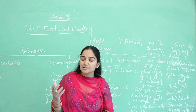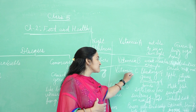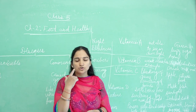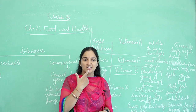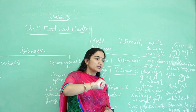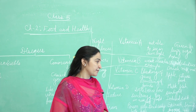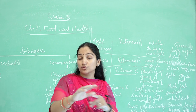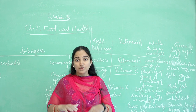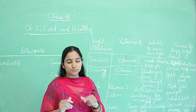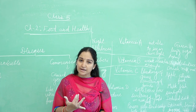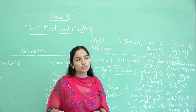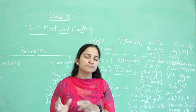The third disease is scurvy, which occurs due to a lack of Vitamin C. How do we identify it? The symptoms are bleeding of gums — the pink-colored gums inside the mouth where the teeth are set start bleeding, and blood comes out. The second symptom is swelling of joints — wherever there are joints in the skeletal system, swelling begins to appear. To cure scurvy, eat apples — an apple daily is recommended — along with oranges, lemon, amla, and all citrus fruits. Sour fruits are all rich in Vitamin C.